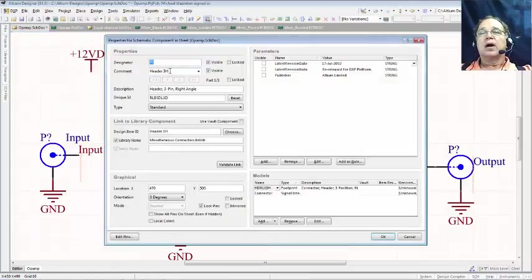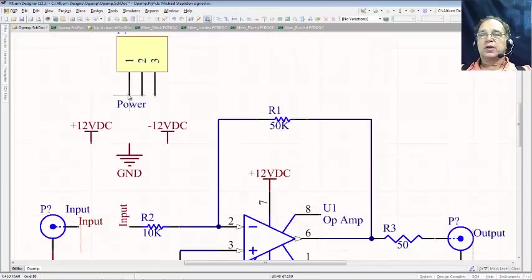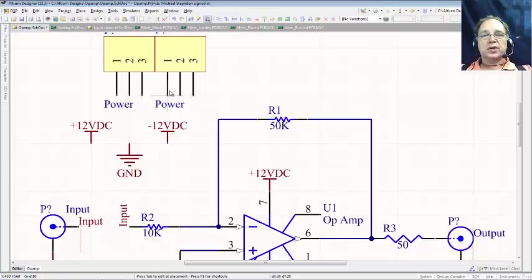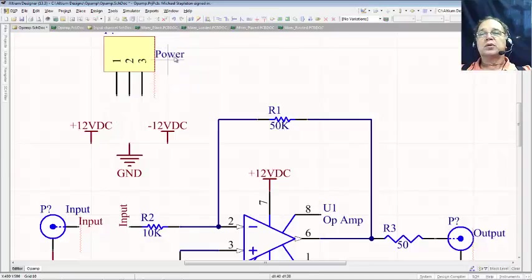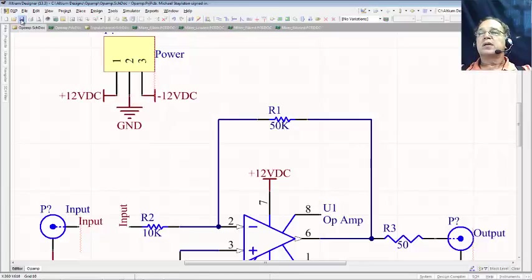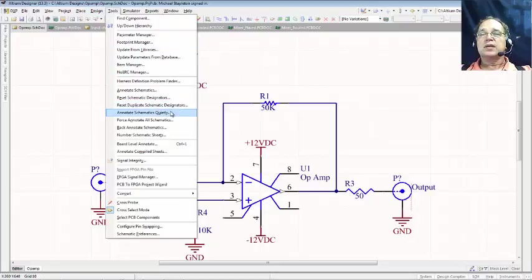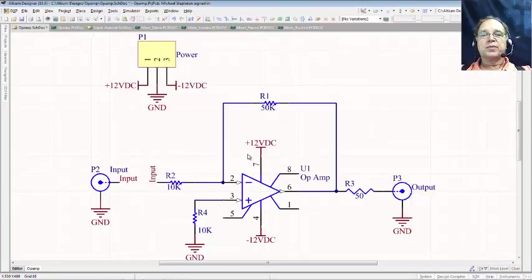I'm going to tell it place. I'm going to hit my tab key. I don't want it to say header 3H. I want it to say power. That's where my power is coming in. I can rotate it. Come up here. Place my part by left clicking. I'm going to right click or hit escape to stop placing parts. Move my little comment. I can now place my power pins on here. Place the ground on there. I'll save it. Another red squiggly. What's the red squiggly warning me about? I need to go to tools. Annotate schematics quietly. Update my schematics. My red squigglies are gone. I'll save.